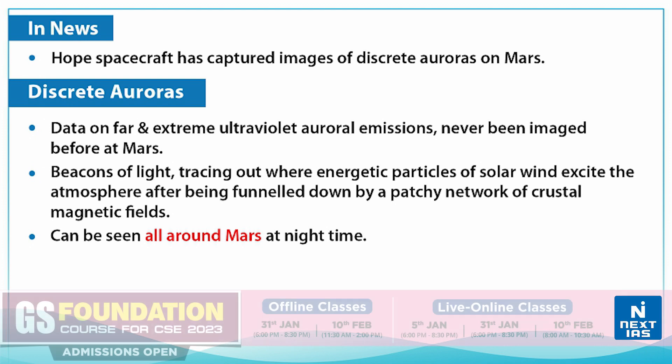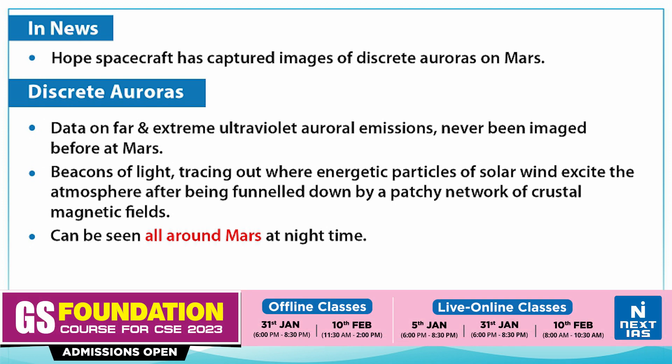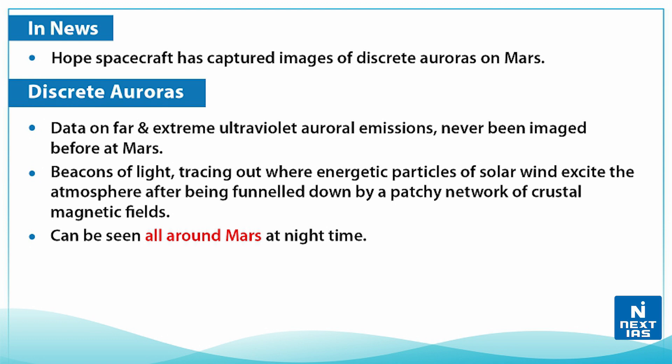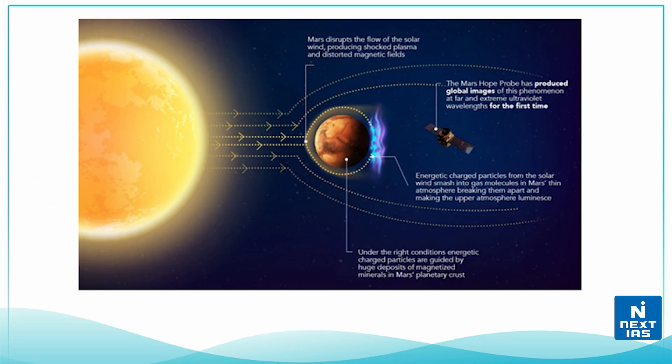Some data on far and extreme ultraviolet auroral emissions that have never been imaged before at Mars have been captured by this mission. The discrete auroras are beacons of light tracing out where the magnetic particles of solar wind excite the atmosphere after being funneled down by a patchy network of crustal magnetic fields.